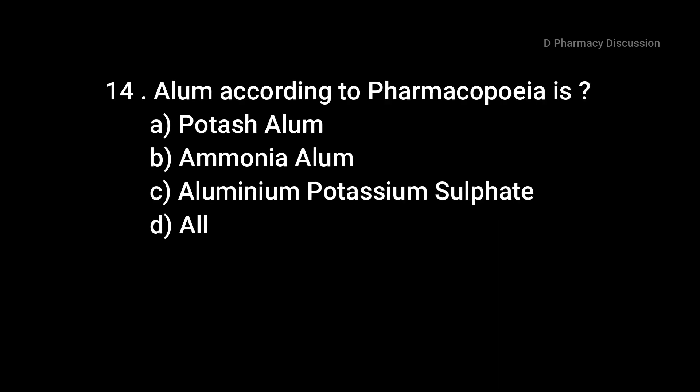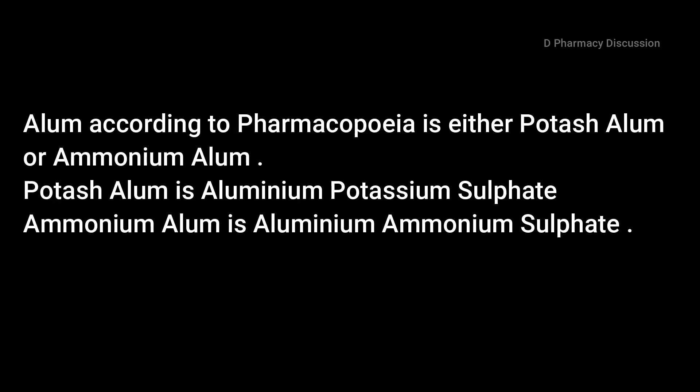Question 14: Alum, according to pharmacopoeia, is — option A: potash alum, B: ammonia alum, C: aluminum potassium sulfate, option D: all. Correct answer is option D, all. Alum according to pharmacopoeia is either potash alum or ammonium alum; potash alum is aluminum potassium sulfate and ammonium alum is aluminum ammonium sulfate.